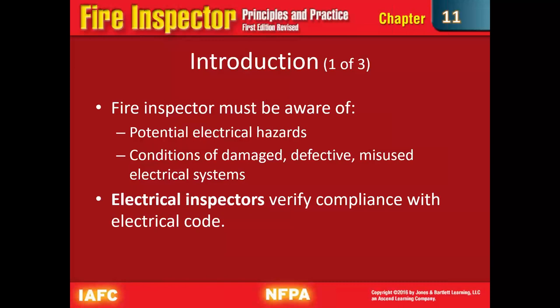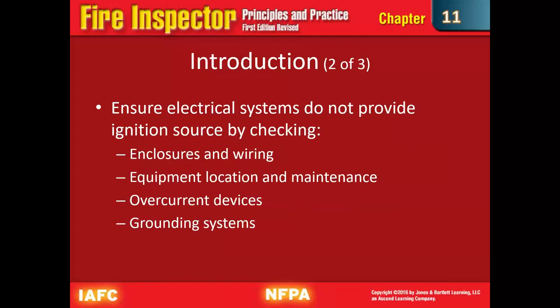As an inspector, we need to be aware that malfunctioning electrical systems cause fires. We may find damaged or defective parts of an electrical system — it could be misused, wired improperly, or a lot of different things. Electrical inspectors verify compliance with electrical code. We need to ensure that electrical systems don't provide ignition sources by checking enclosures, wiring, and making sure insulation on the wiring is intact and tightly secured.